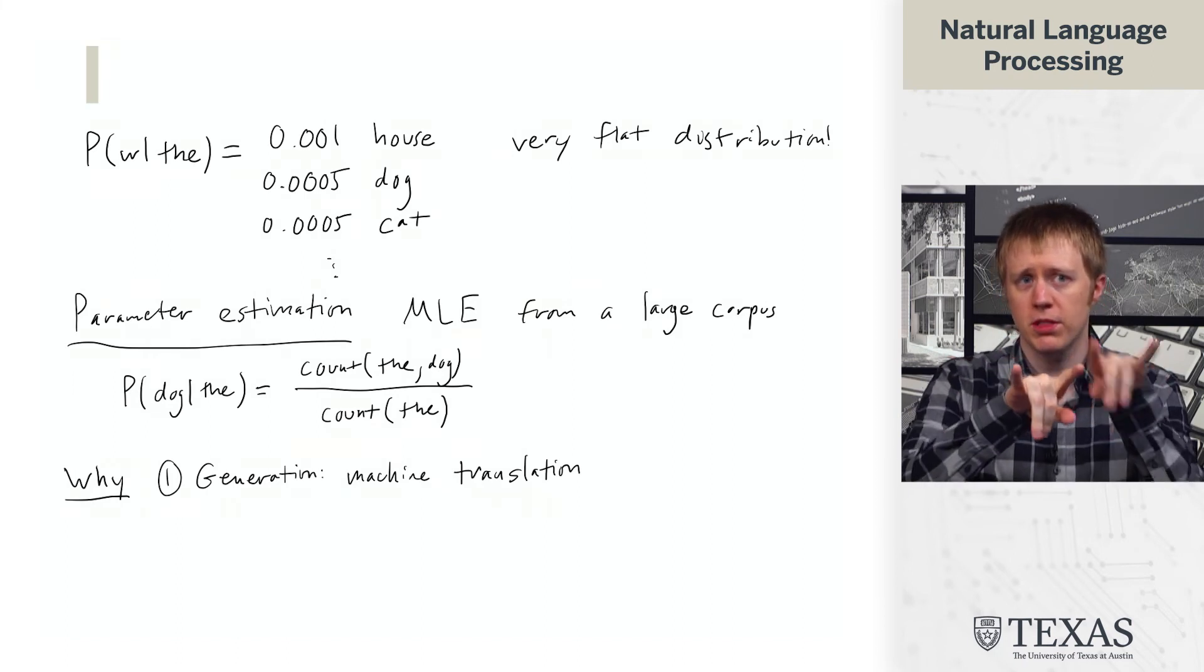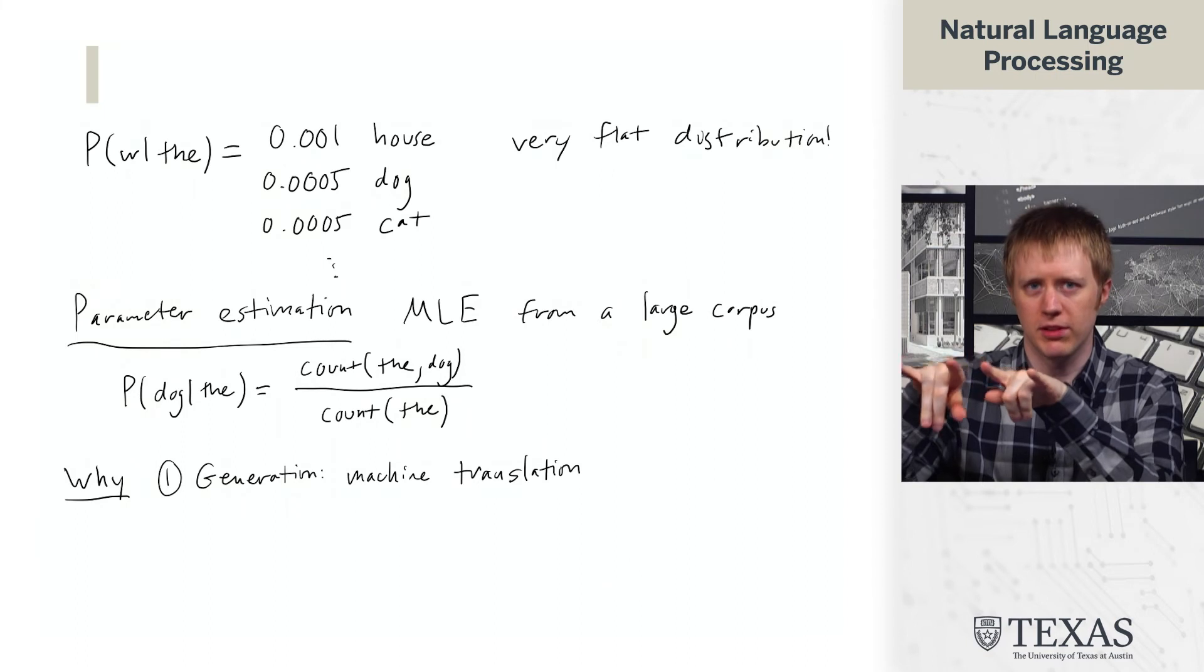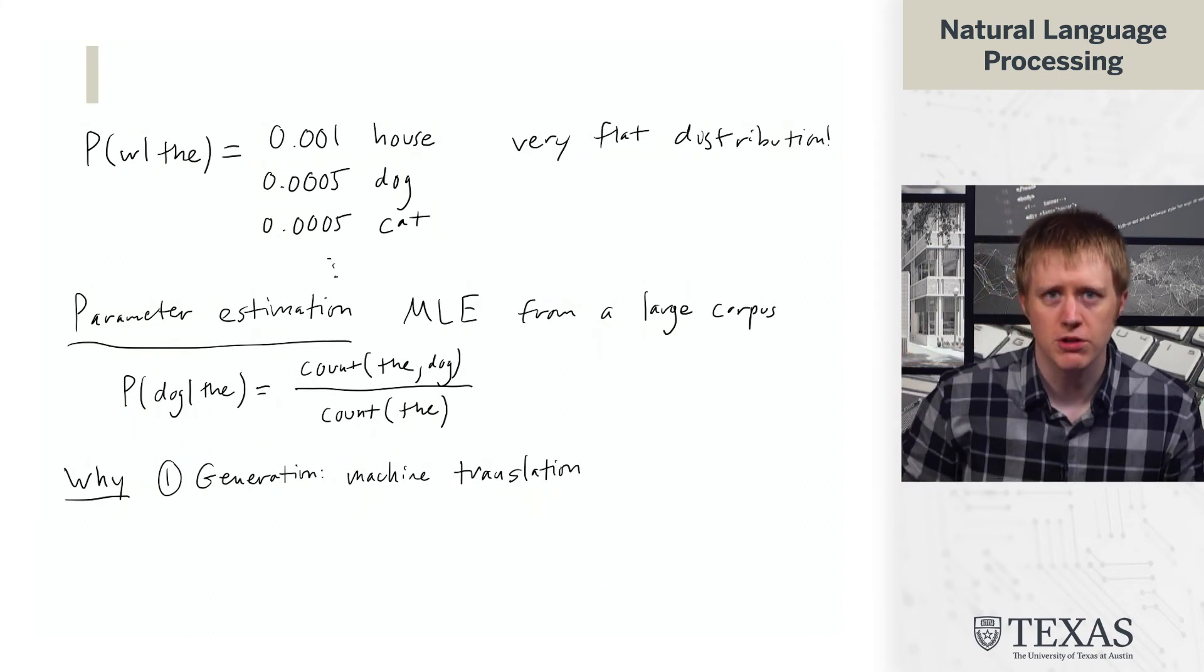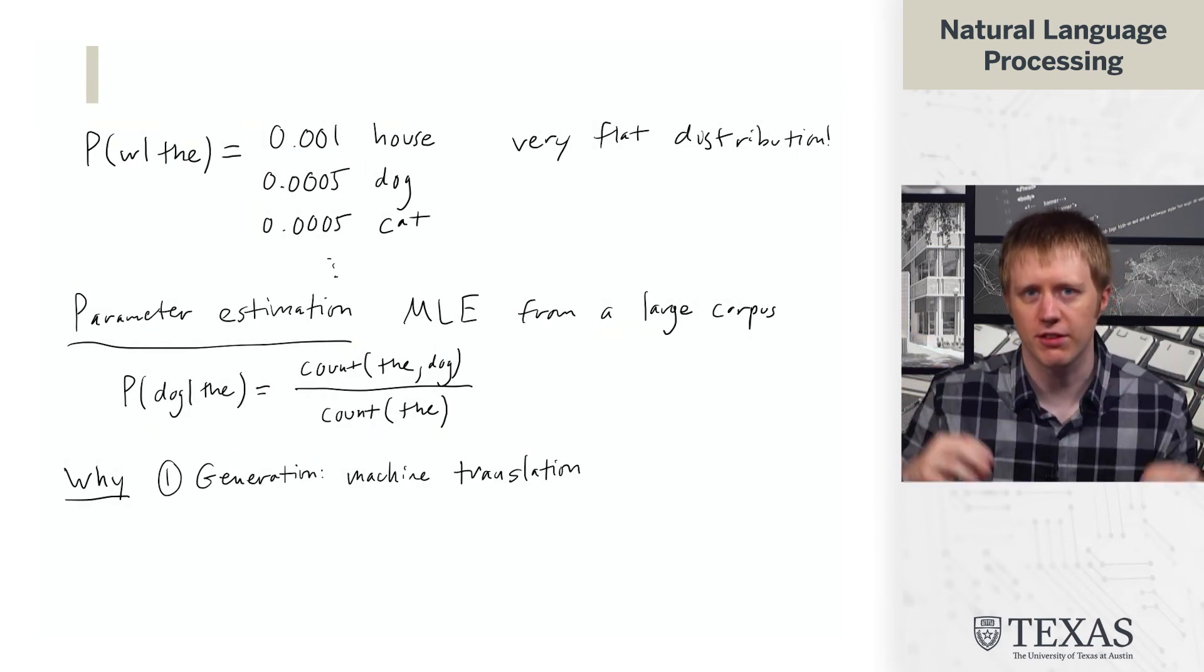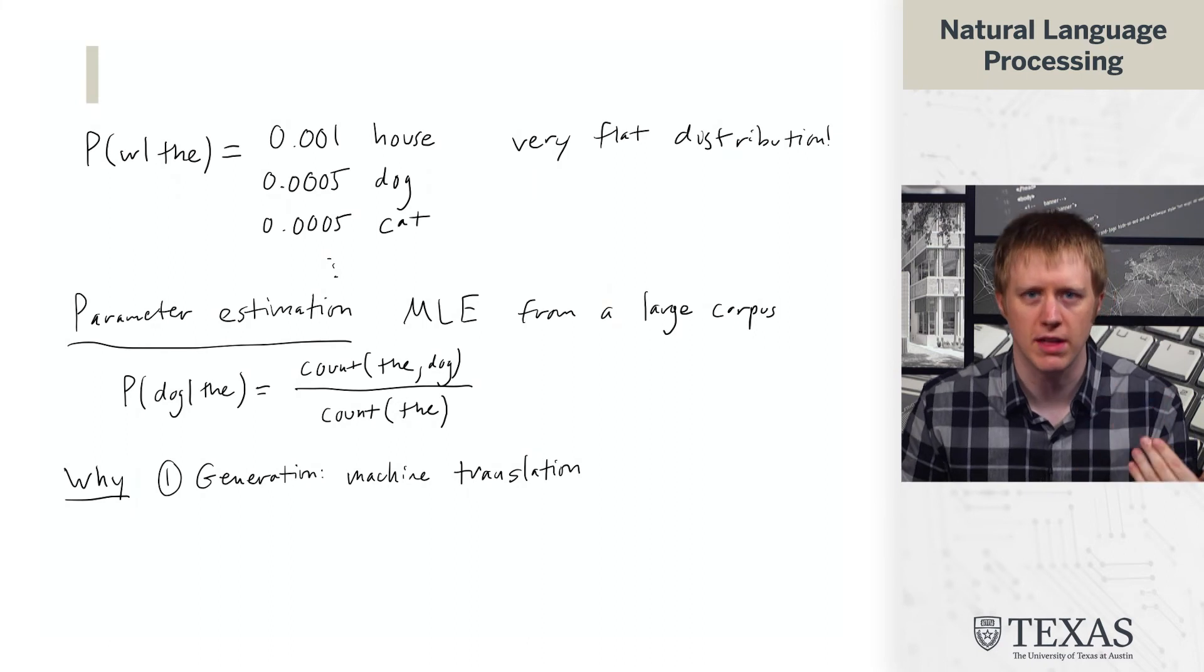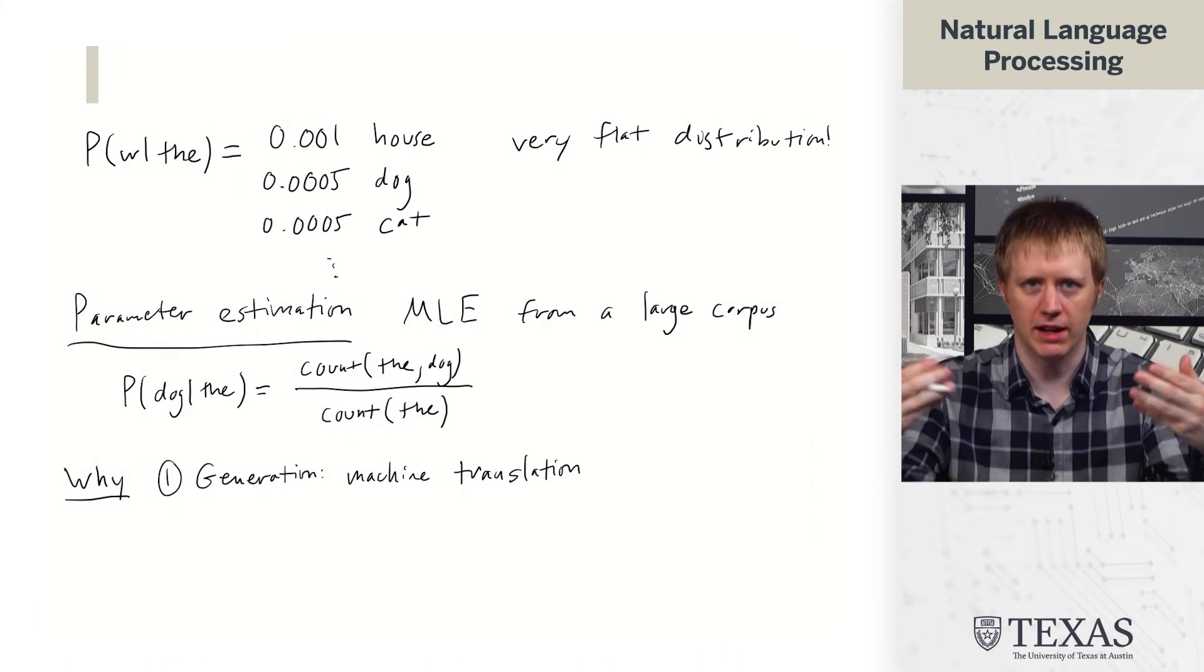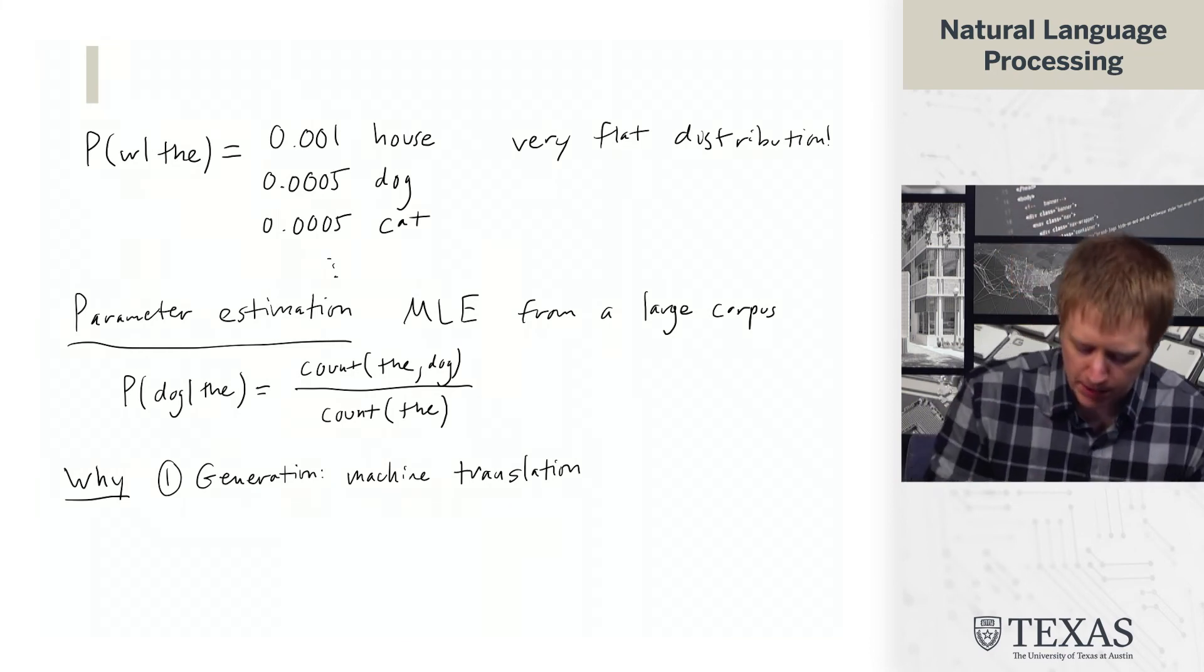And when you put those candidate translations together, you're assembling these phrases, you're kind of gluing them together in this pairwise fashion. And what you use an n-gram language model for is to assess, okay, the stitching together of all these individual phrases, did I do that in a way that kind of gives me plausible language in whatever language I'm translating into, in that it should have reasonably high probability under one of these language models.